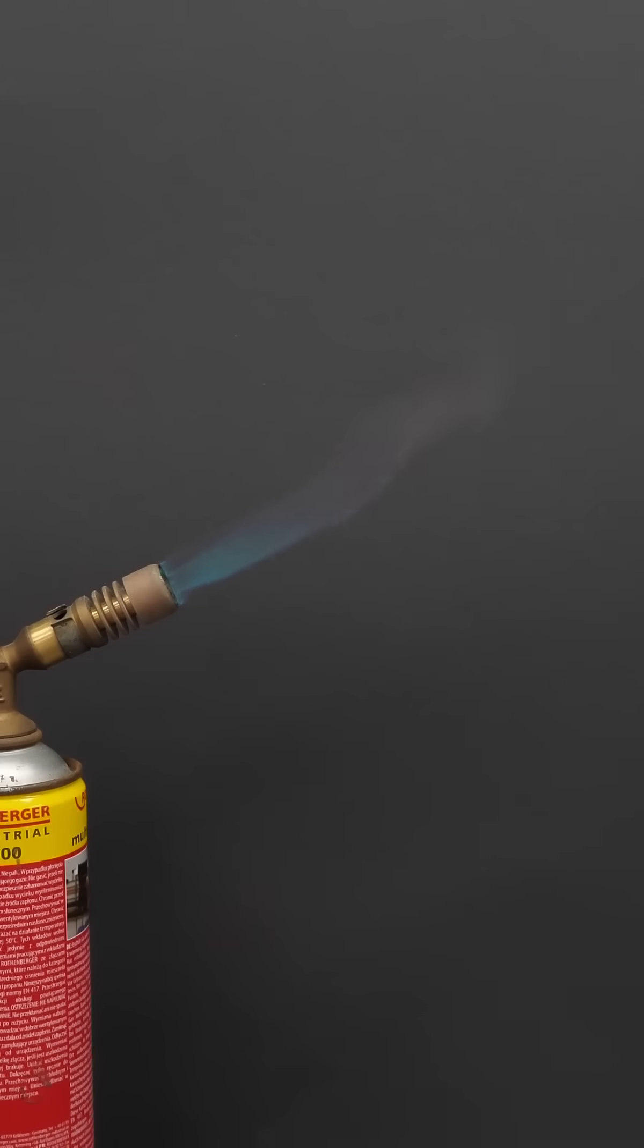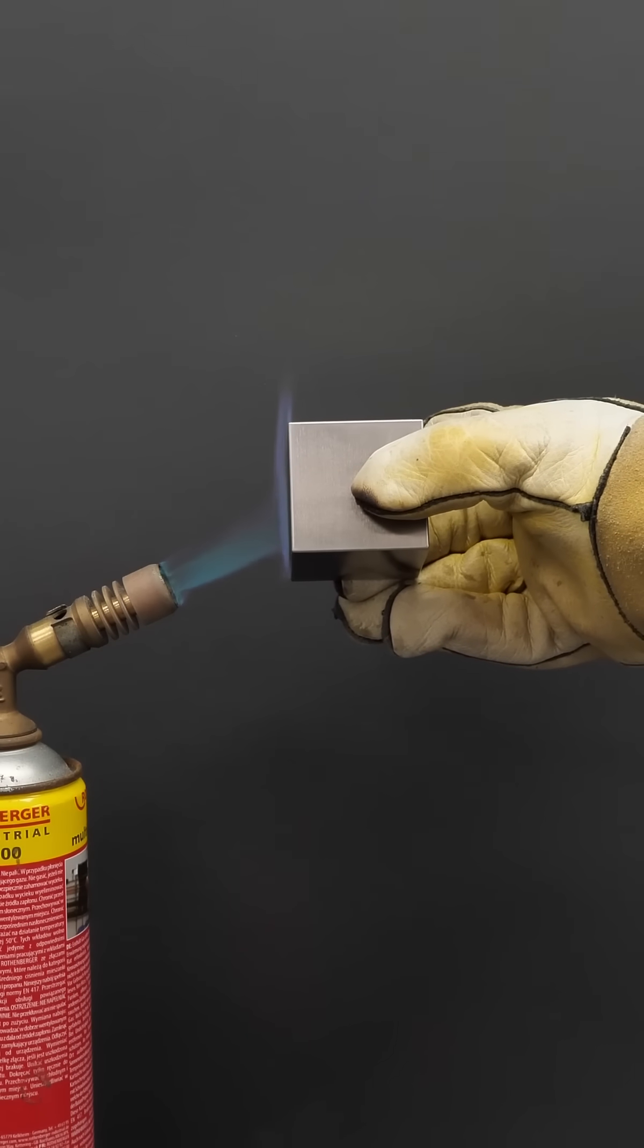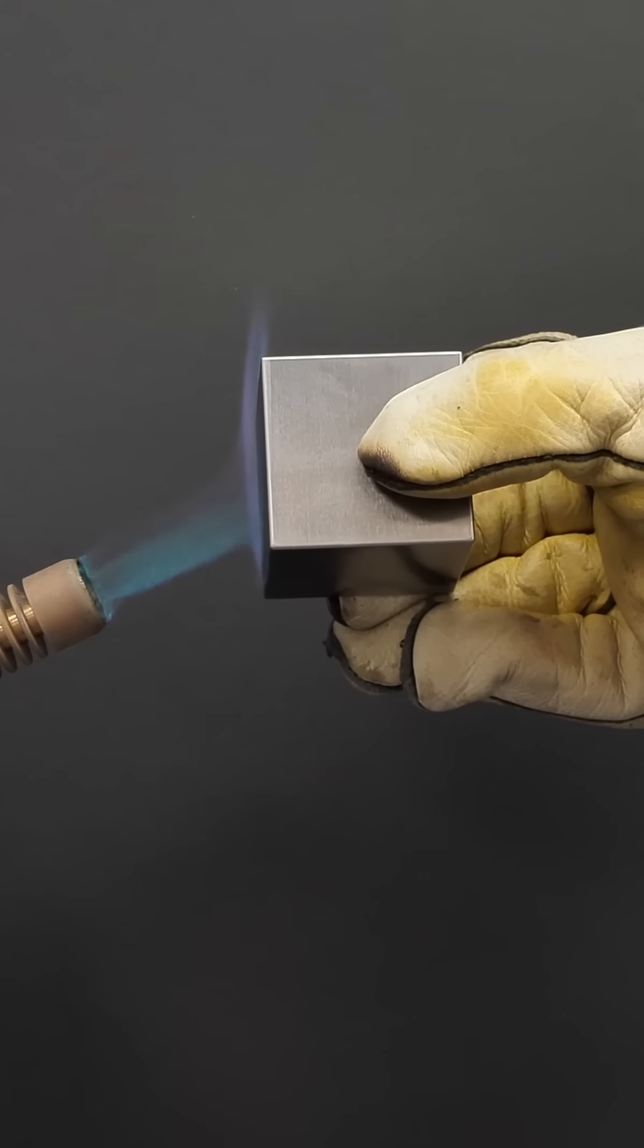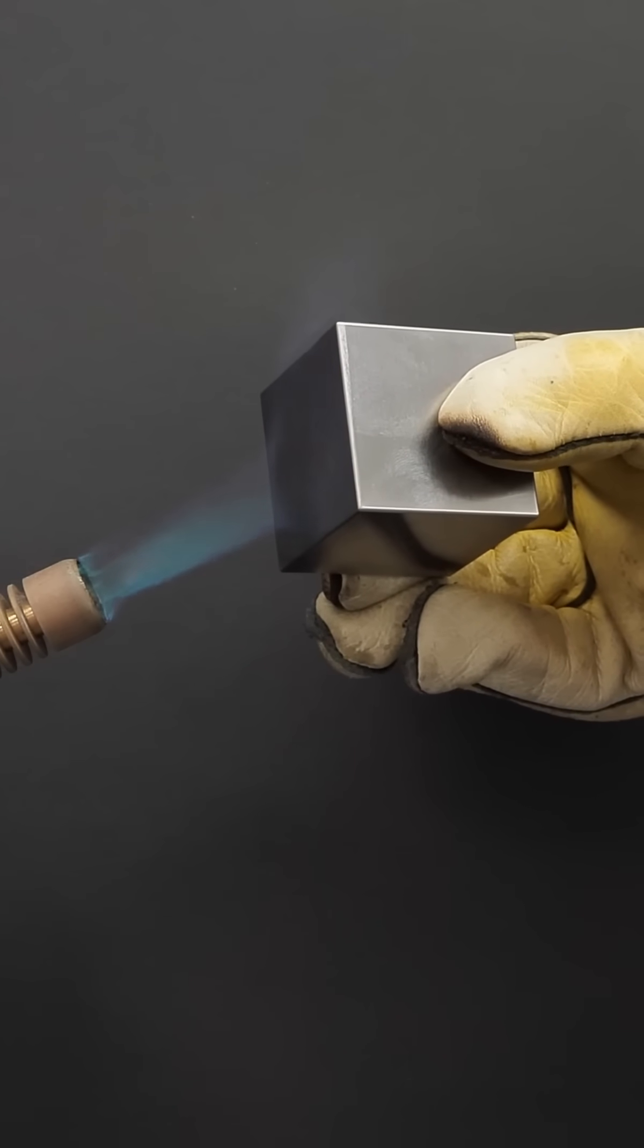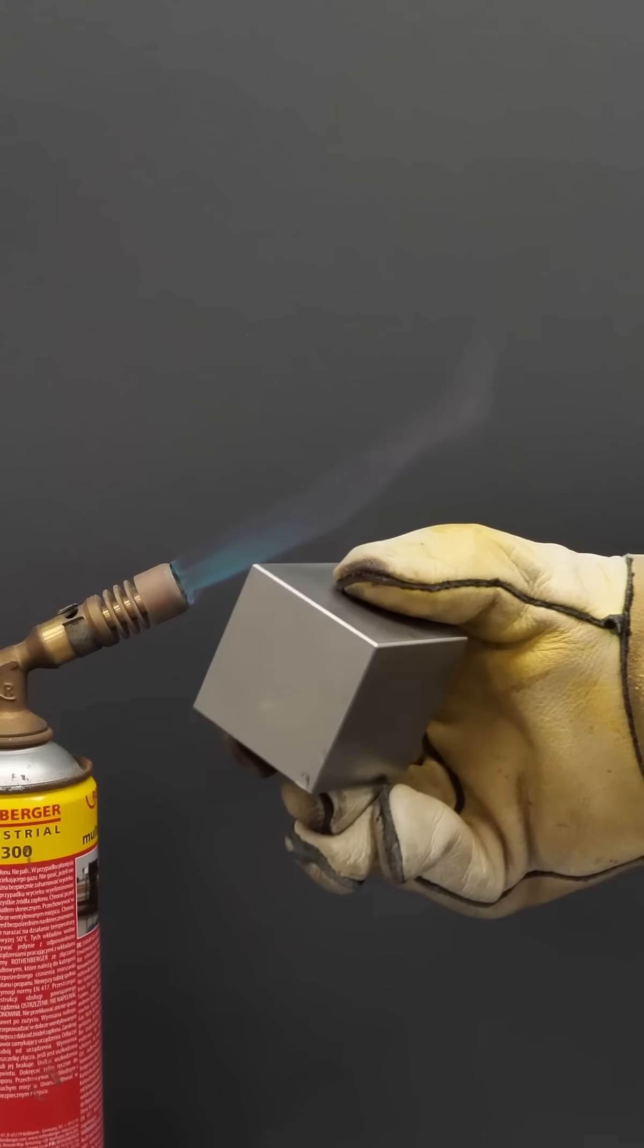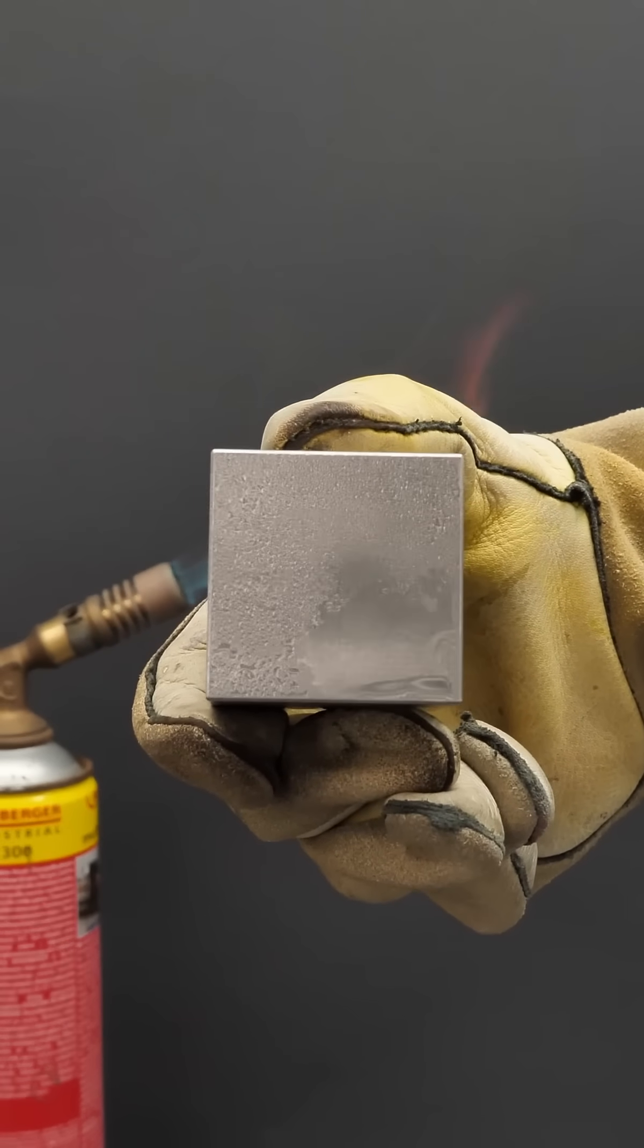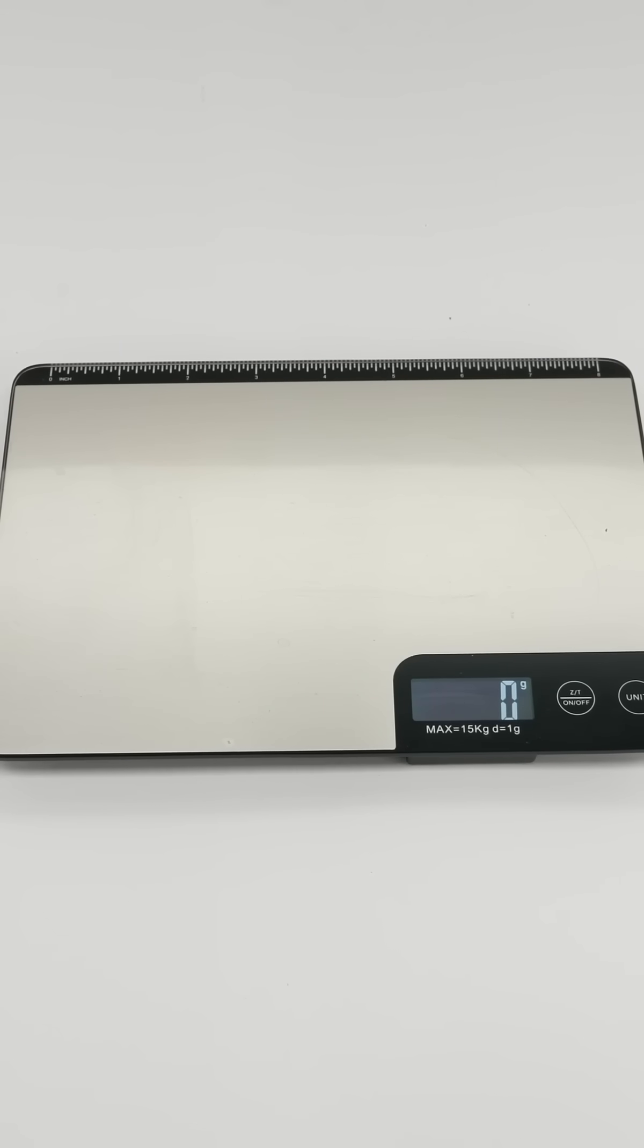As if that weren't enough, tungsten also has the highest melting point of any metals. It takes more than 3,420 degrees Celsius to melt it. There's no way I could manage that, not even with magnesium powder or thermite, and definitely not with my torch.